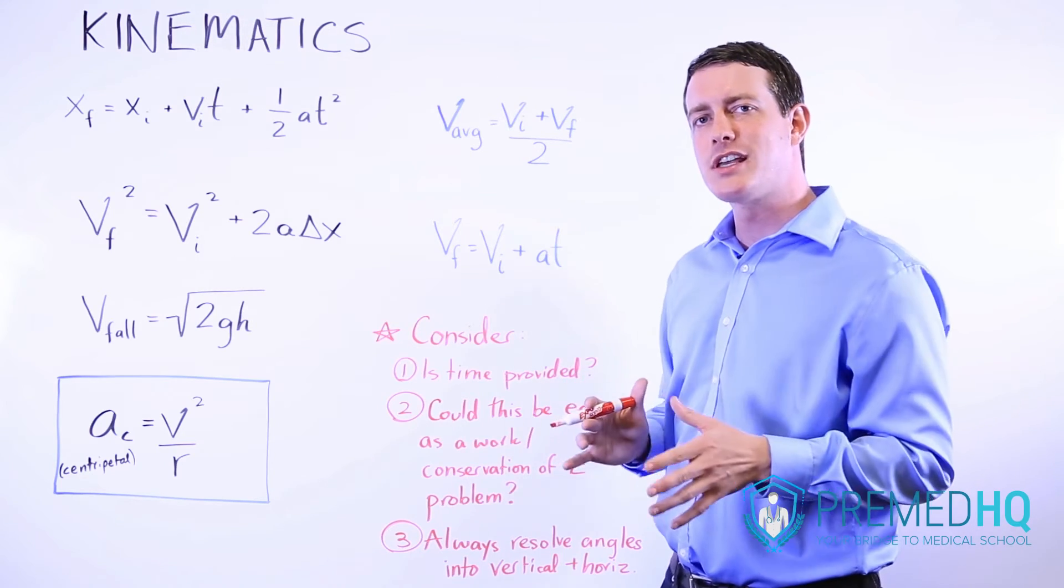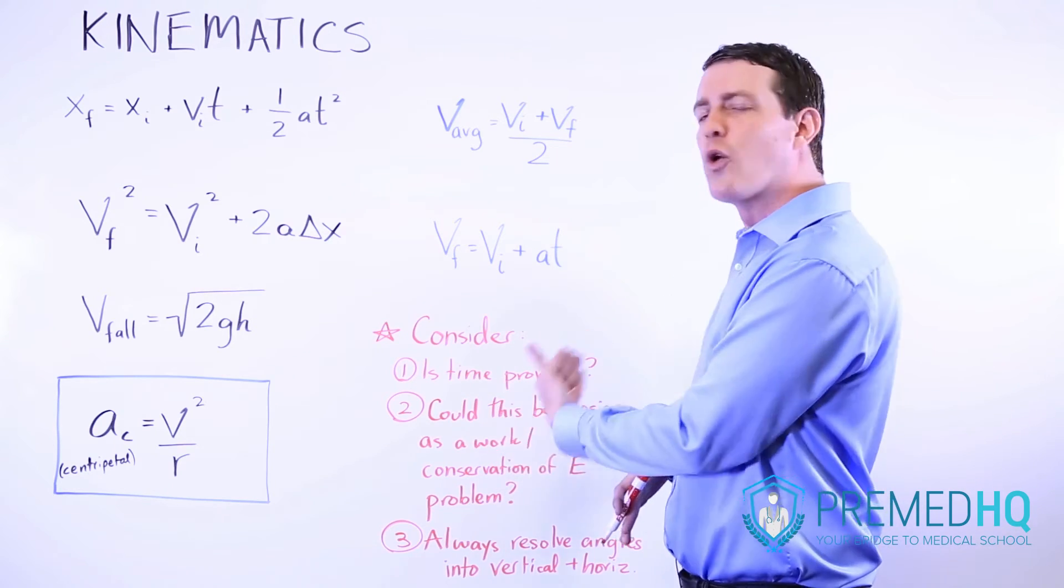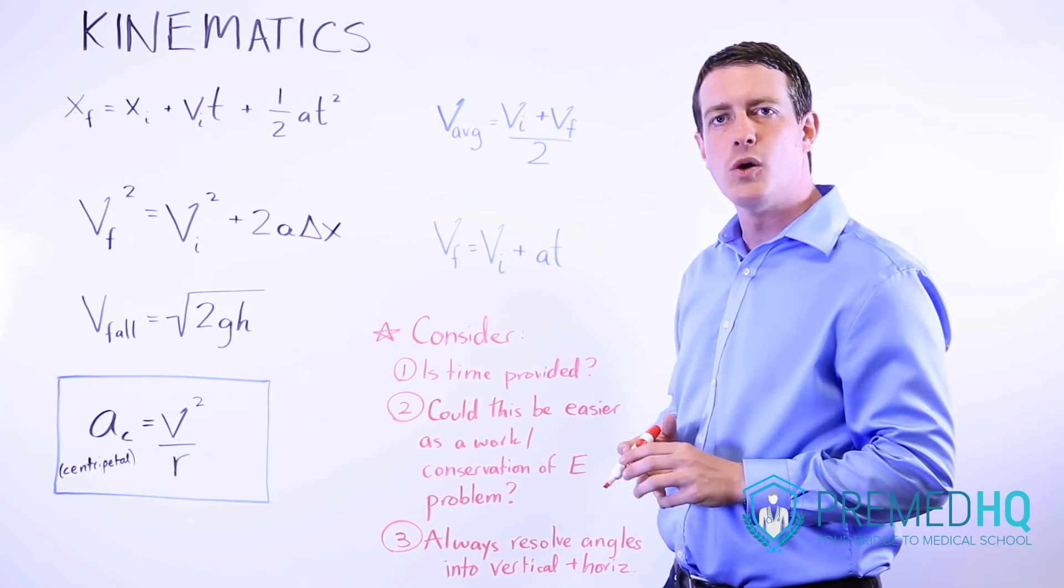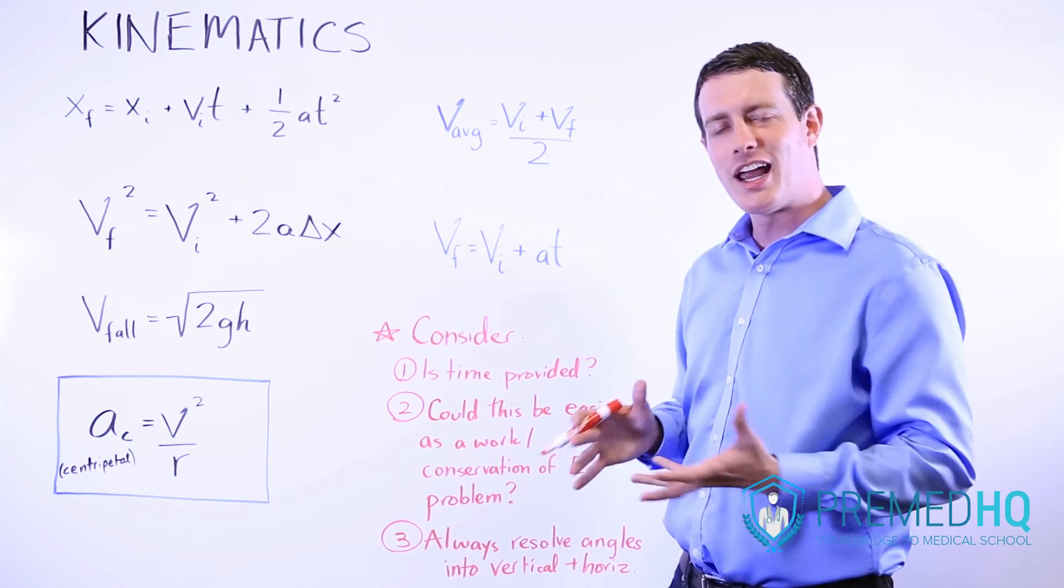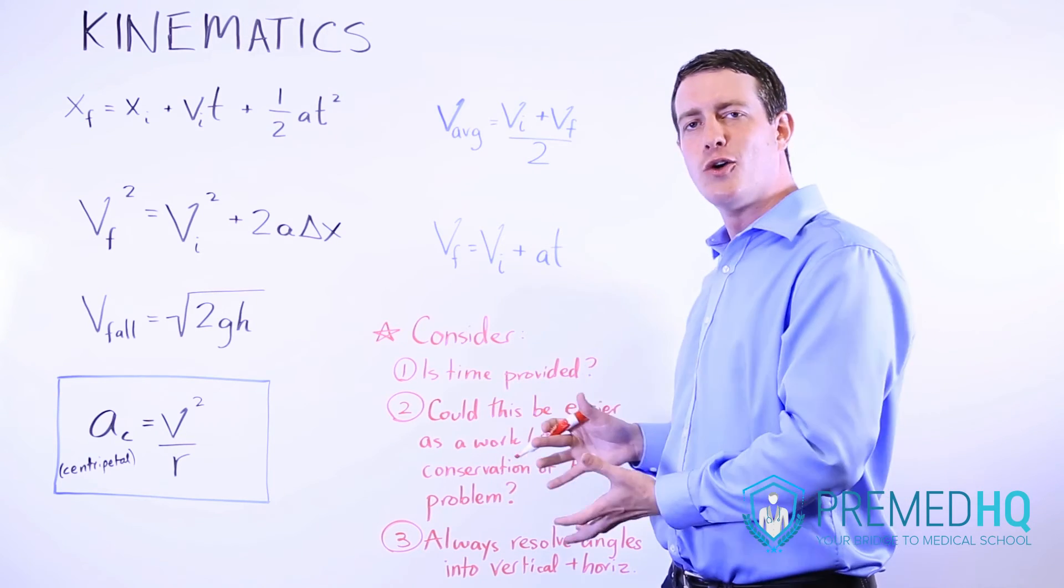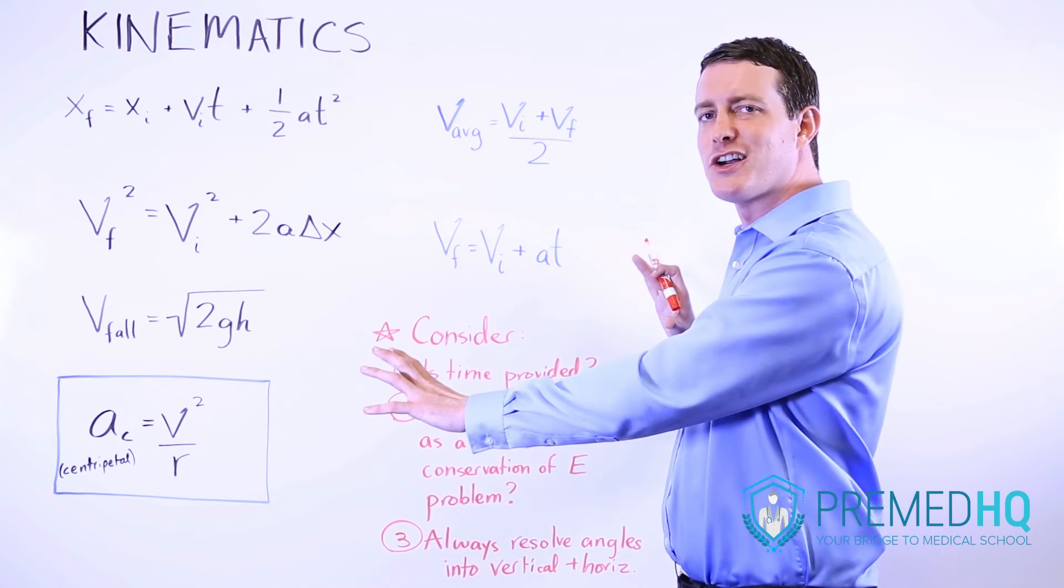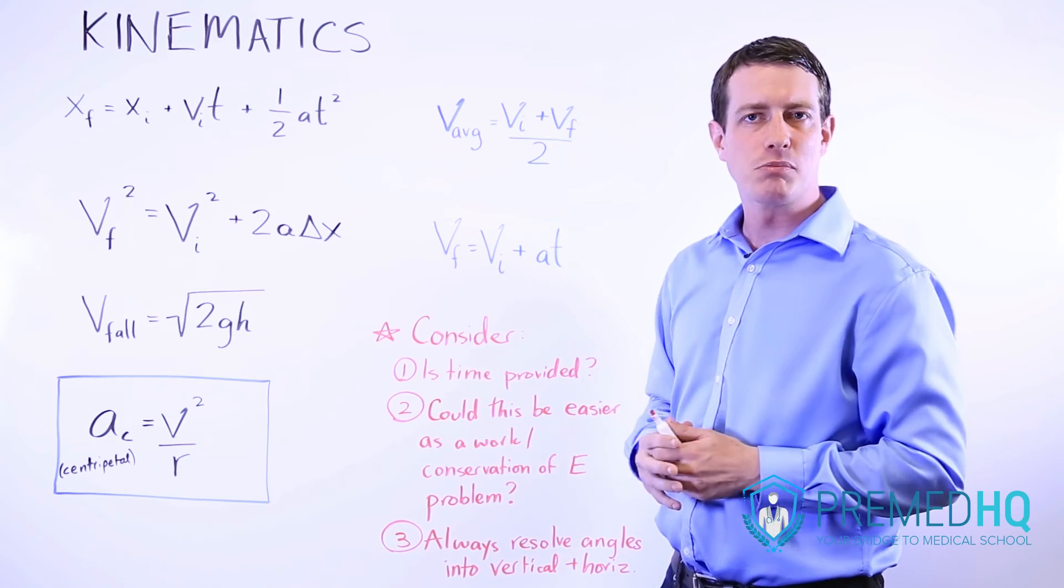But sometimes rather than using kinematics, you can instead solve it as a conservation of energy or work-based problem. Be aware of times when you have kinetic energy, which is one half mv squared, and you can calculate the amount of work done over a distance and treat it as conservation of energy rather than as a kinematics problem.